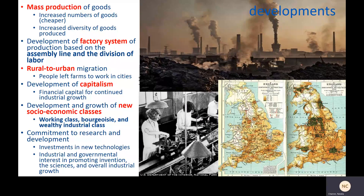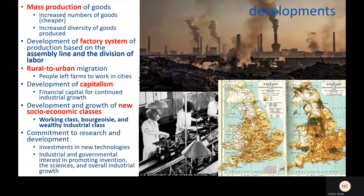As a result, mass production of goods became possible — producing increasing numbers of the same product for much less money and labor. The diversity of goods increased because production became easier. Factories tend to be built in cities, so we see massive rural-to-urban migration — urbanization — as people left their farms to go work in cities. This is also the moment that leads to the rise of capitalism, that economic system that aims to seek profits for business owners, because you need capital — money — to invest in order to build these huge factories and machines.